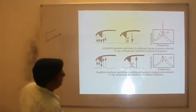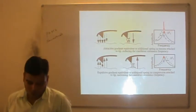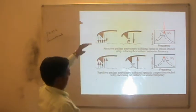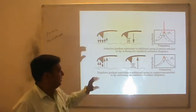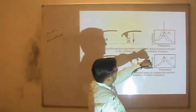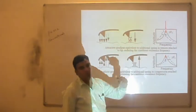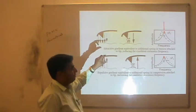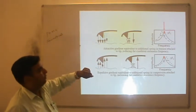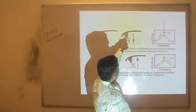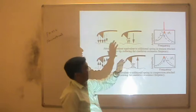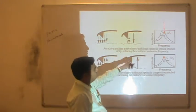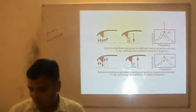This is the easiest way to understand what is happening in electric force microscopy or magnetic force microscopy. When the cantilever bends toward the sample, there is an attractive force exerted and a shift in frequency from the natural frequency f₀. In case of attraction, there is a decrease in frequency, whereas in case of repulsive forces there is an increase in the oscillation frequency.